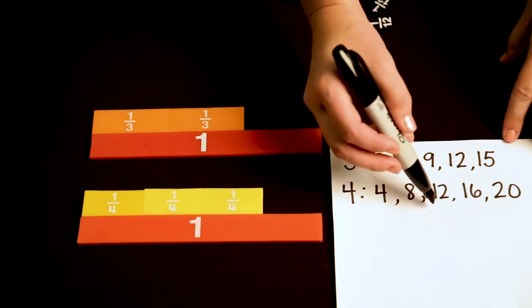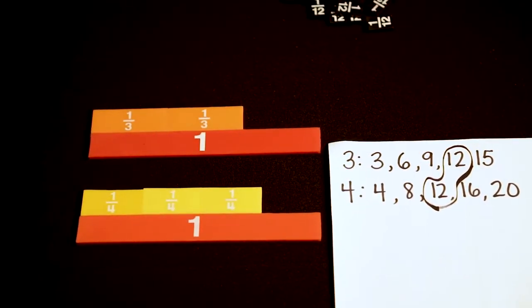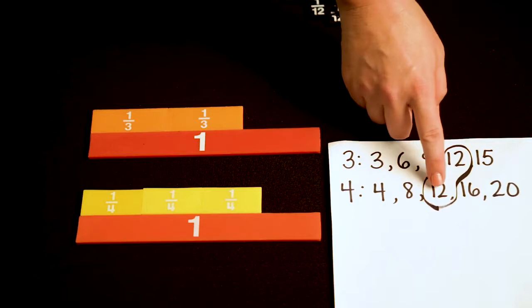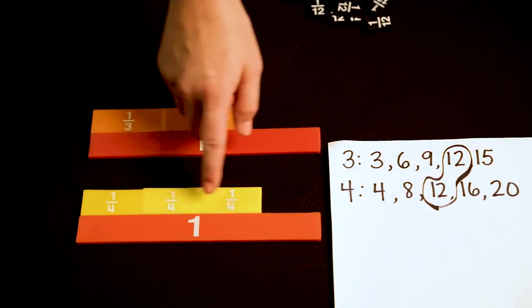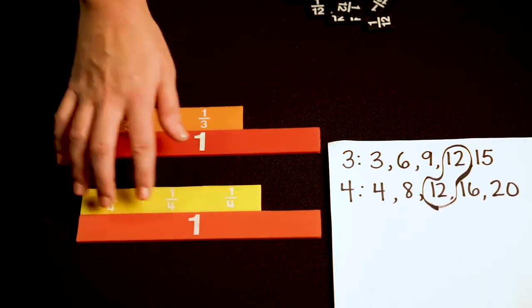Here I can see that the least common multiple among these two fractions is 12. So this means that I need to multiply 4 times 1, 2, 3 to get to a denominator of 12. So that means if I have a denominator of 12,